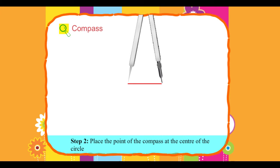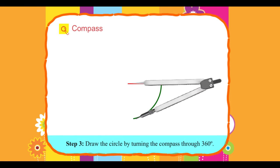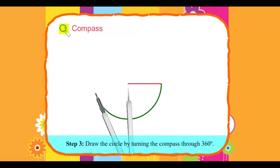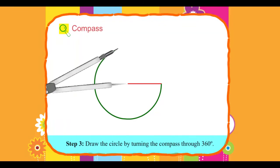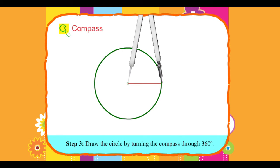Step 2: Place the point of the compass at the center of the circle. Step 3: Draw the circle by turning the compass through 360 degrees.